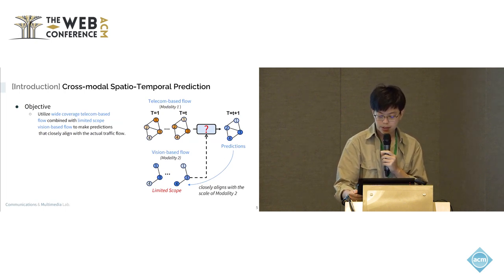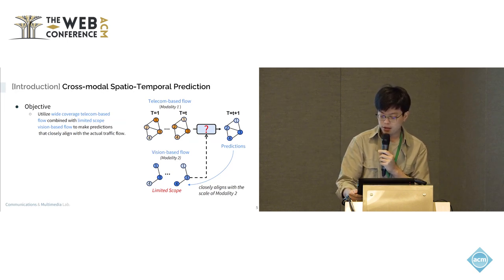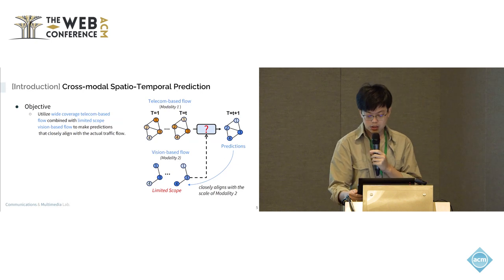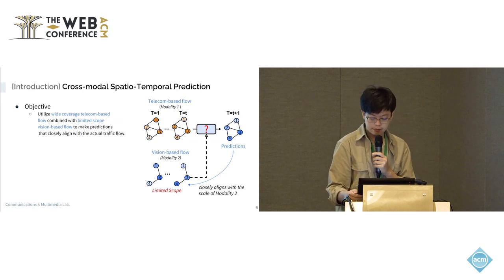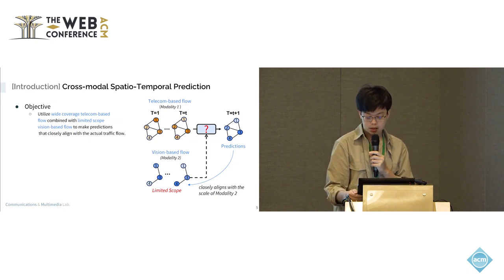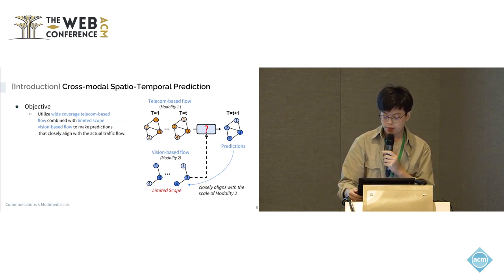So our goal shifts to using the telecom-based flow combined with the limited vision-based flow to make predictions closely aligned with the actual traffic flow. By performing such cross-modal prediction, we can take advantage of both the extensive coverage of telecom data and ensure that predictions are aligned with the actual traffic, providing standard-quality flow.